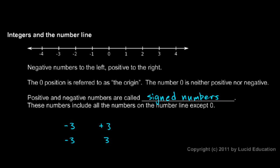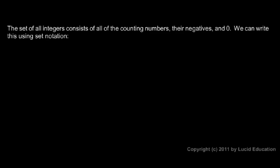The set of all integers, and that's an important mathematical term, consists of all the counting numbers—that's 1, 2, 3 and so on, the way we naturally count—their negatives, negative 1, negative 2, negative 3 and so on, and 0.